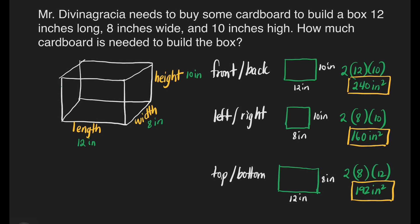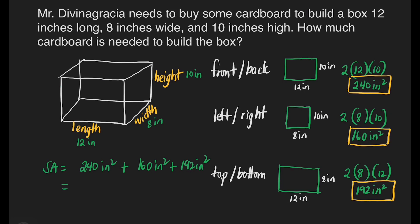We're ready to solve for the total surface area: 240 square inches plus 160 square inches plus 192 square inches. 240 plus 160 is equal to 400; 400 plus 192 is 592 square inches. This is our final answer. Mr. Agustin needs to buy 592 square inches of cardboard to build this rectangular prism.